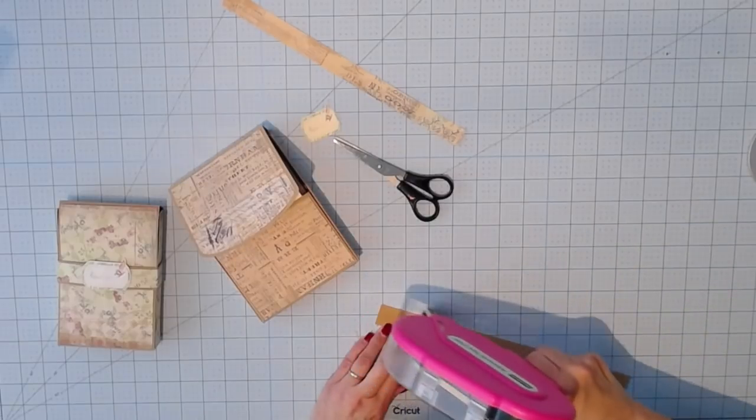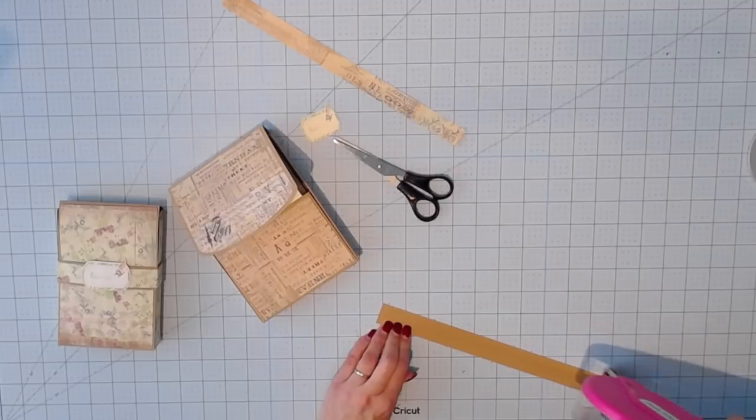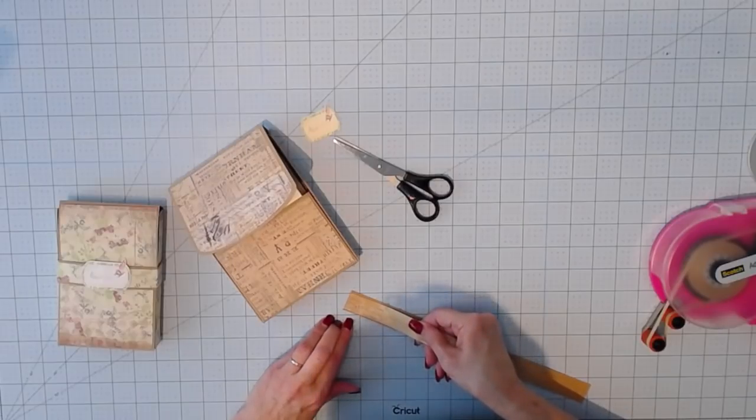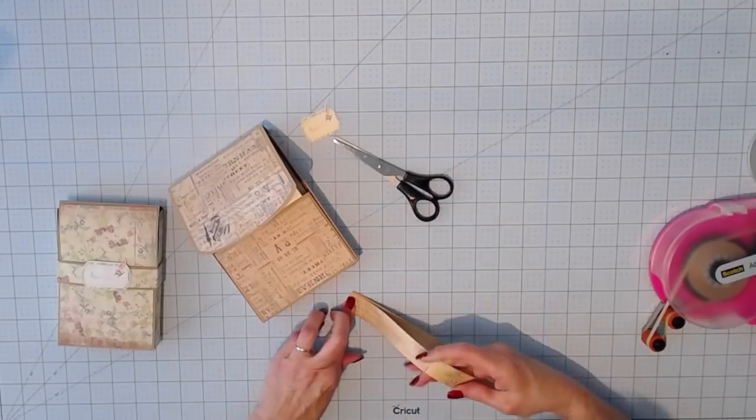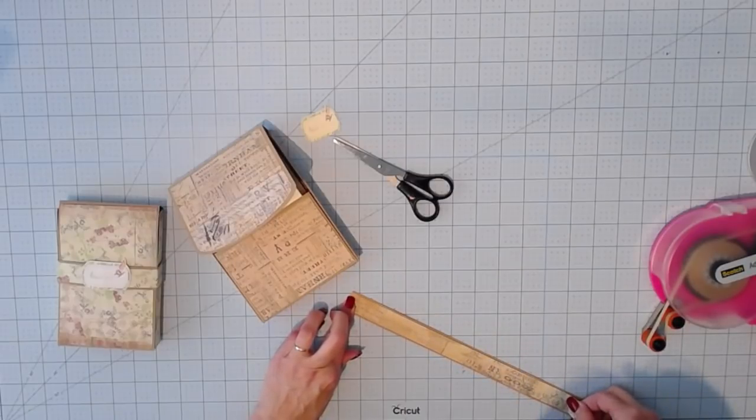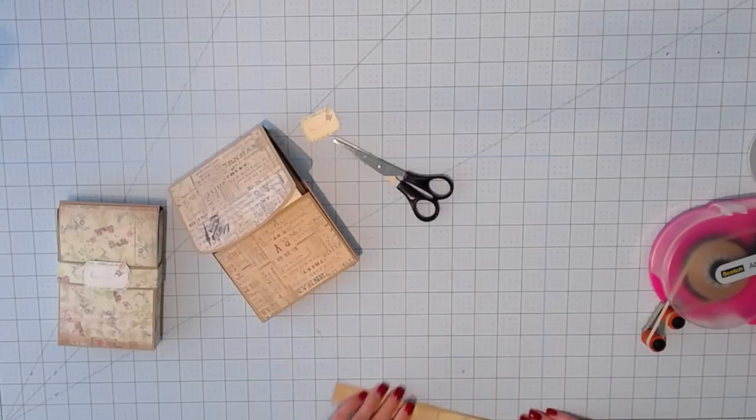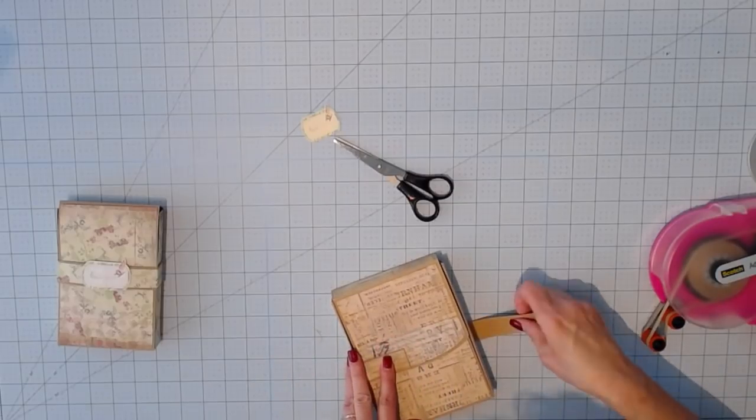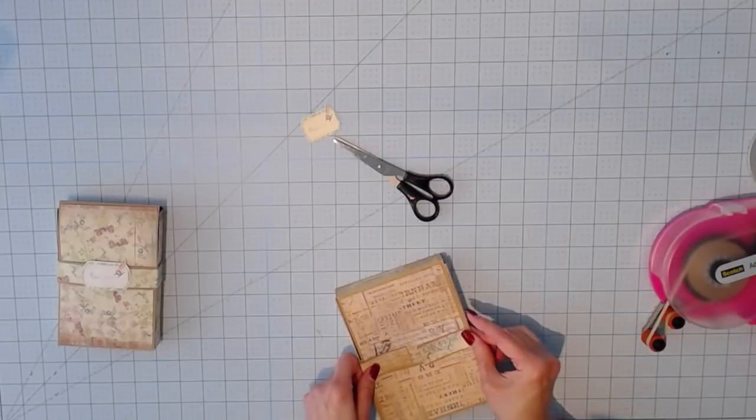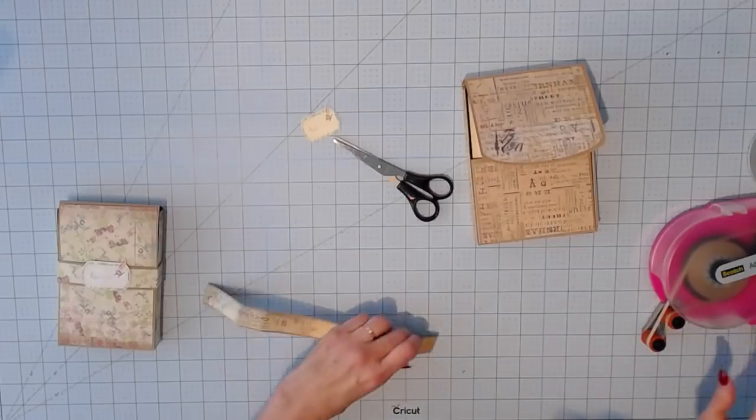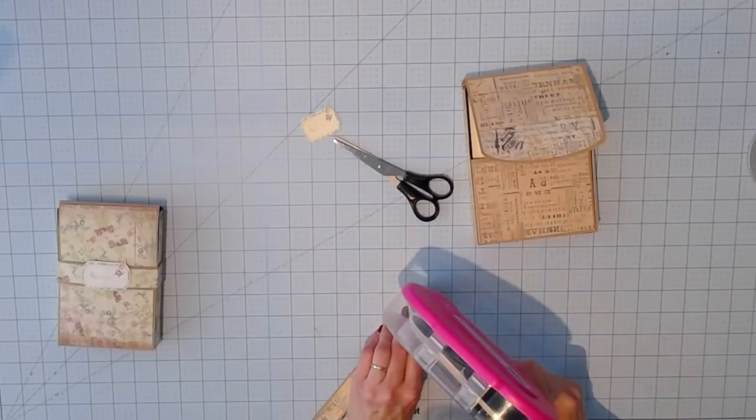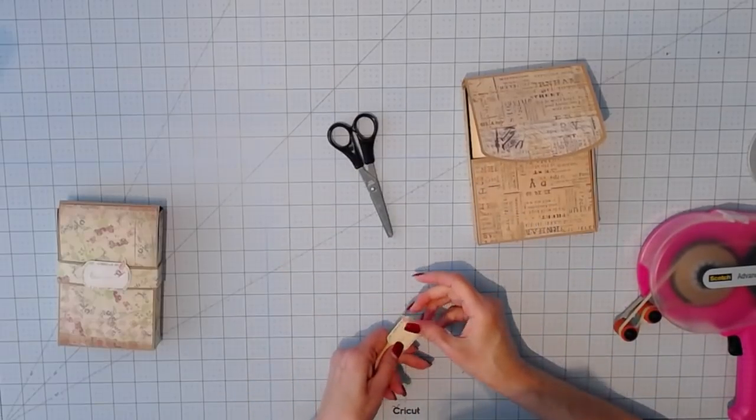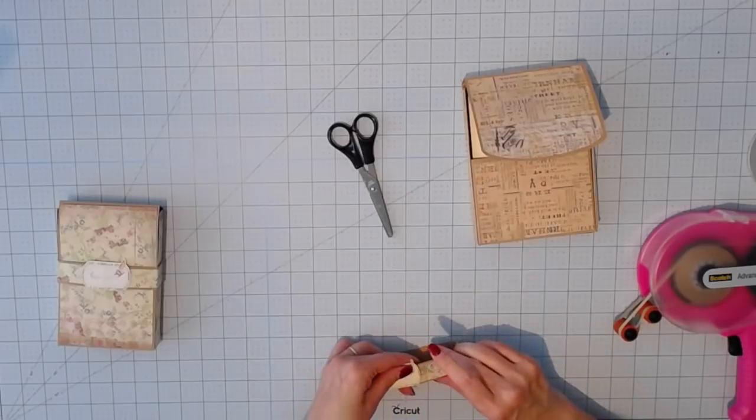And finally we're going to prepare the band that wraps around the box to keep it closed. I'm adding adhesive to the bottom layer and attaching my decorative panel on top. You want to have created a tag to match the cards if you made different cards than I used. I like to fold the band around the box so that I know where to add my tag. I'm folding it and I'm going to add adhesive just to the end on one side. I'll add my tag and then add adhesive to the second side.